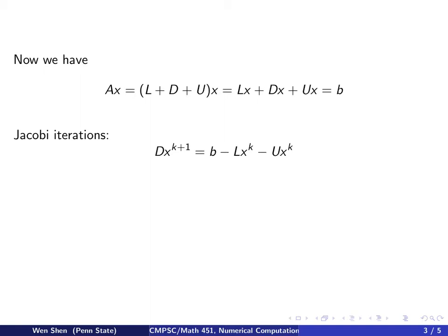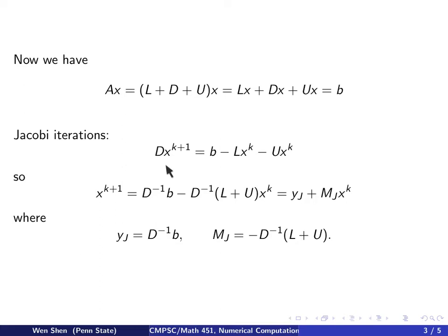We keep the diagonal term on the left and move the L and the U all to the right. And on the right, we substitute the x with x^k, and the value it returns becomes x^(k+1). We now do some manipulation. We can multiply both sides by D^(-1) on the left and solve for x^(k+1). So this becomes D^(-1) applied on b, and D^(-1) applied on these two terms, which we join as (L + U) times x^k.